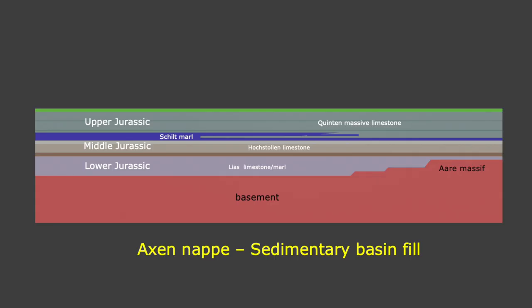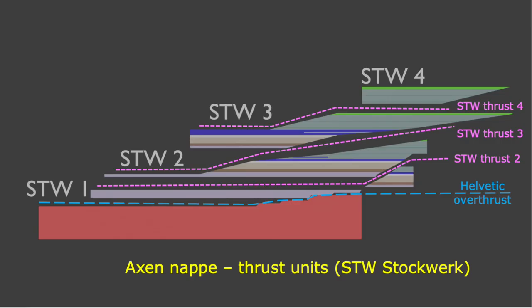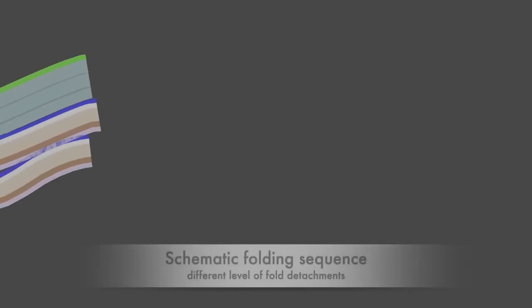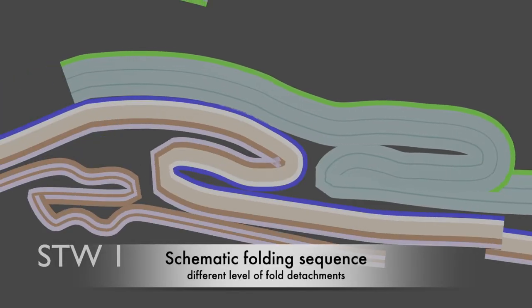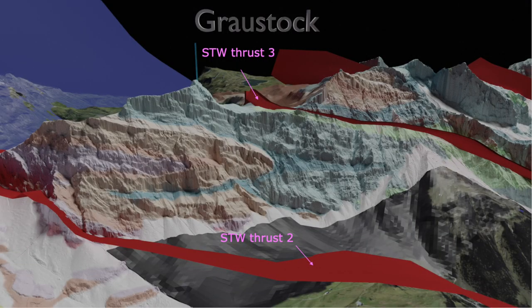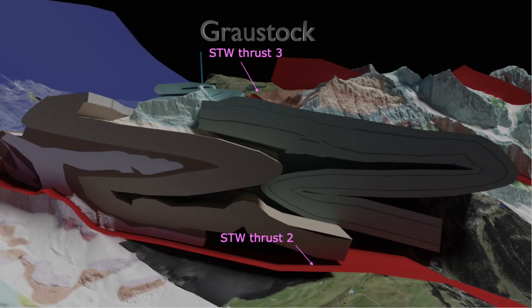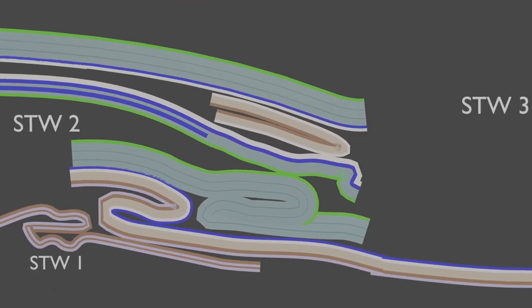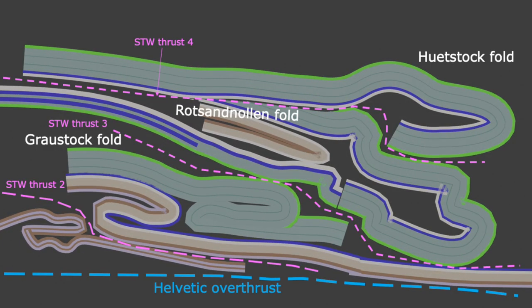The Triassic to Jurassic sedimentary pile was thrust over the Aar Massif during the Alpine orogeny. During its 30-kilometer northwards transport, it split up into several thrust sheets along thick marl and shale units. During its transport along the Helvetic overthrust, the thrust sheets underwent deformation and were formed into stacked and imbricated recumbent folds, as we just observed during our virtual tour.